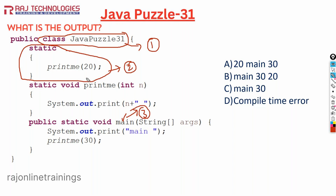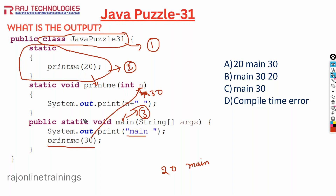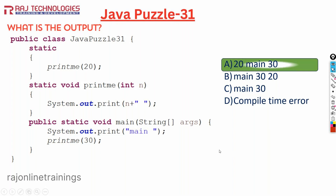So when we run the program, first the static block executes and calls printme with 20. The value of n is 20 and it prints 20. After that it enters into the main method, prints the message 'main', then calls printme with 30. The value of n is now 30 and it prints 30. So the correct output is option A: 20, main, 30.